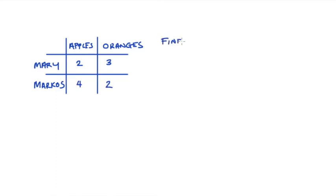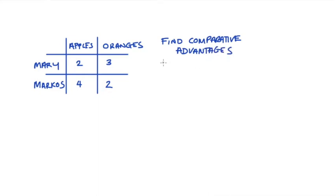The first thing we need to do is find out who, if anyone, has the comparative advantage in the production of which good. Recall that an agent has a comparative advantage in the production of some good if that person has a lower opportunity cost. So our first step is to find the opportunity cost for our agents.